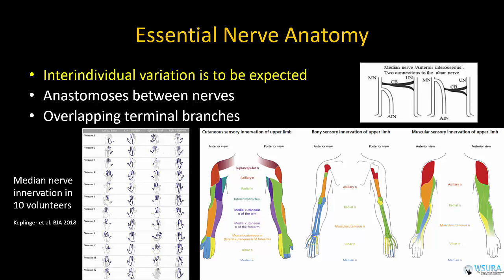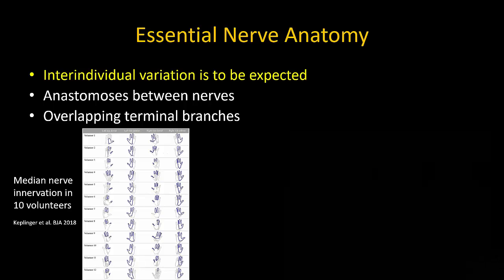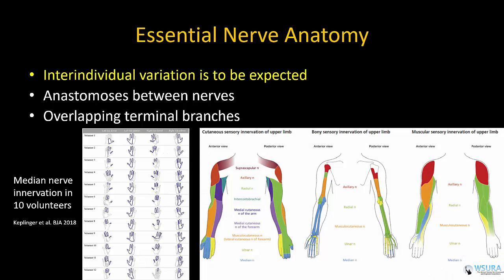Witness the difference in median nerve territories amongst 10 volunteers in this study by Keplinger and colleagues. What was even more interesting was that in all subjects, there was always an area of the hand not innervated by any of the three major terminal nerves. With regard to muscles, ligaments, and bone, their nociceptors are generally innervated by branches arising from nerves that run in their vicinity.